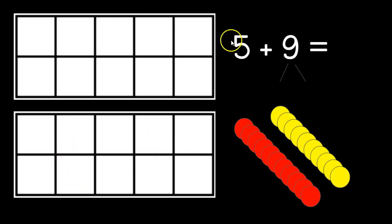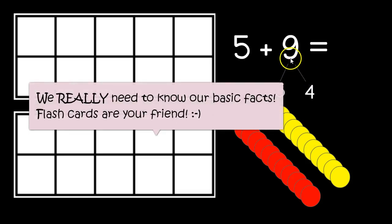Alright. So here we have 5 plus 9. We want to decompose the 9. We know that 9 is 5 plus 4. So 5 and 5 makes a 10 and then 10 plus 4 is 14. So we could use the tens frames or if your manatee likes numbers and knows some of their basic facts very well then they could just break down the 9, or as we say decompose the 9.